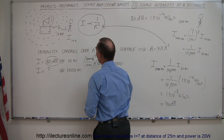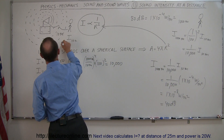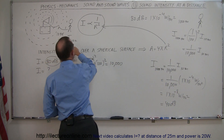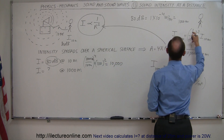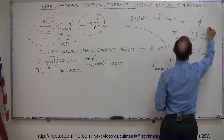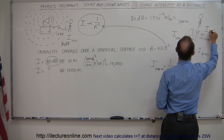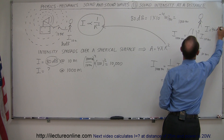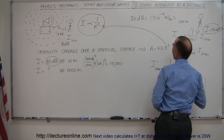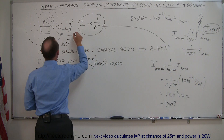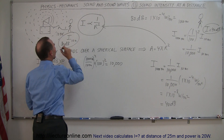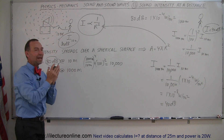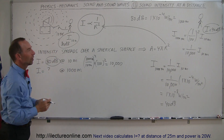So if the intensity is 80 decibels at 10 meters, then 100 times as far away — at 1,000 meters — the intensity would be equal to 40 decibels. That gives you a pretty good idea of how intensity fades over distance.